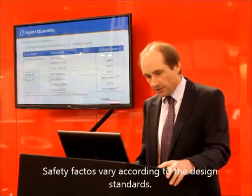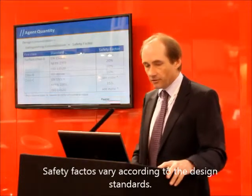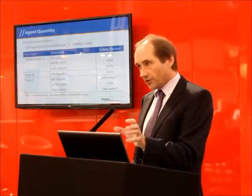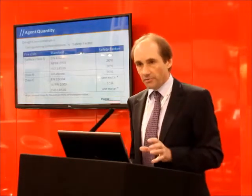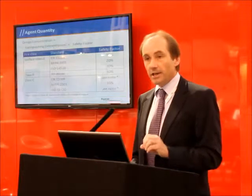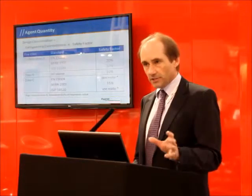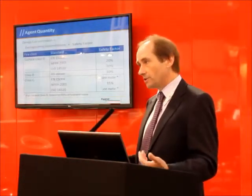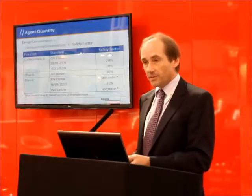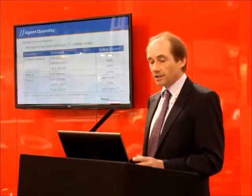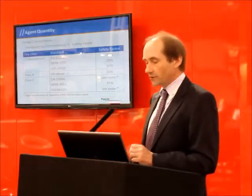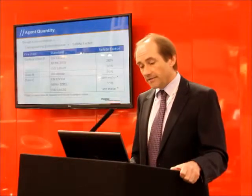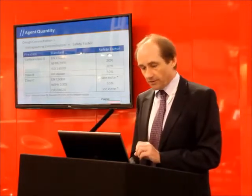So when we talk about the safety factors, the safety factors vary according to the design standards. A surface Class A fire under EN 15004 would require that you determine the extinguishing concentration and then apply a safety factor of 30% — that would get to your design concentration. NFPA 2001 looks at a similar method to determine the extinguishing concentration but then applies a reduced safety factor. So what actually happens is if you design a system according to EN 15004 compared with NFPA 2001, you will need more gas on the European system. ISO 14520 applies a 30% safety factor for Class A fires, in line with all of the standards.